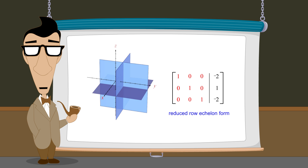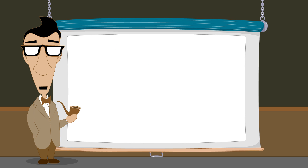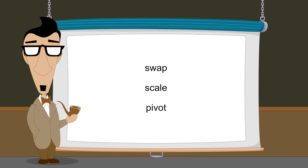So what effect do each of the three elementary row operations — swap, scale, and pivot — have on the planes?